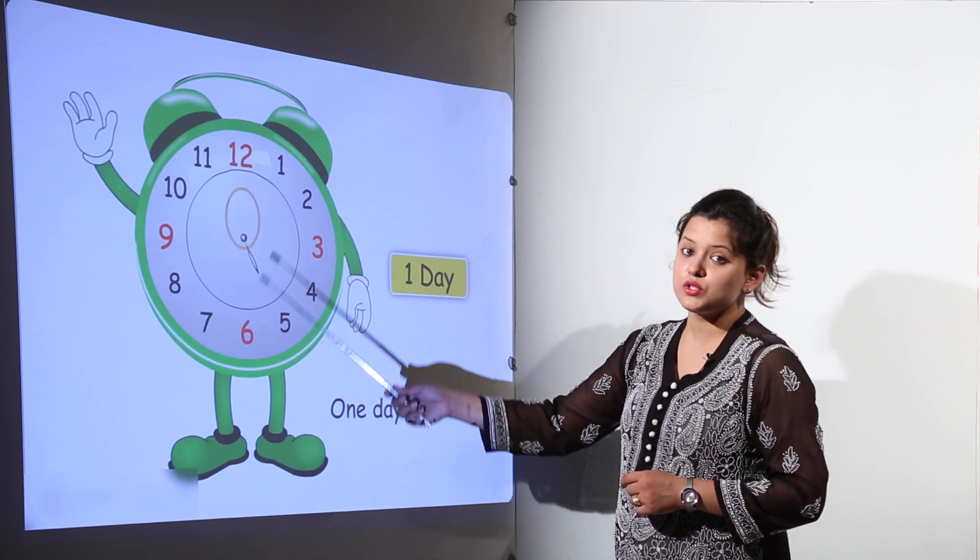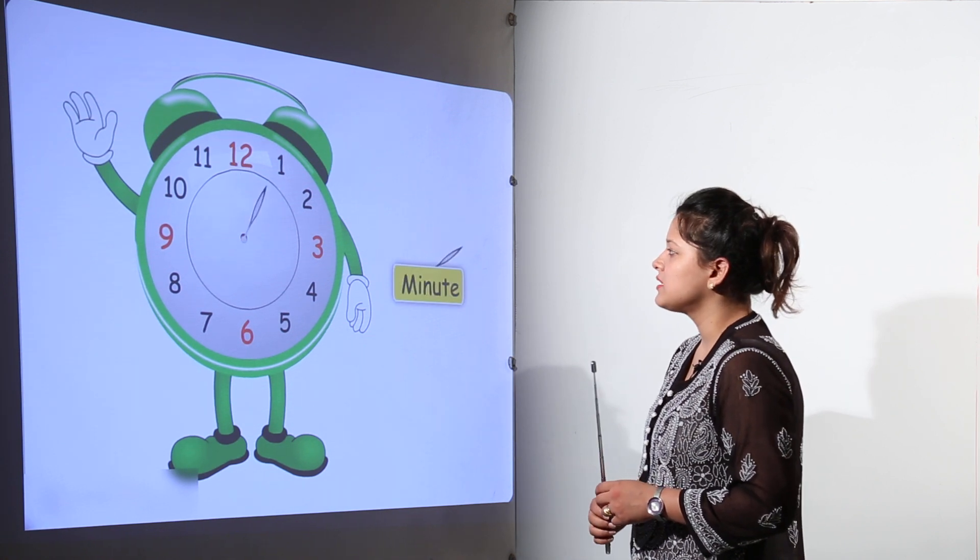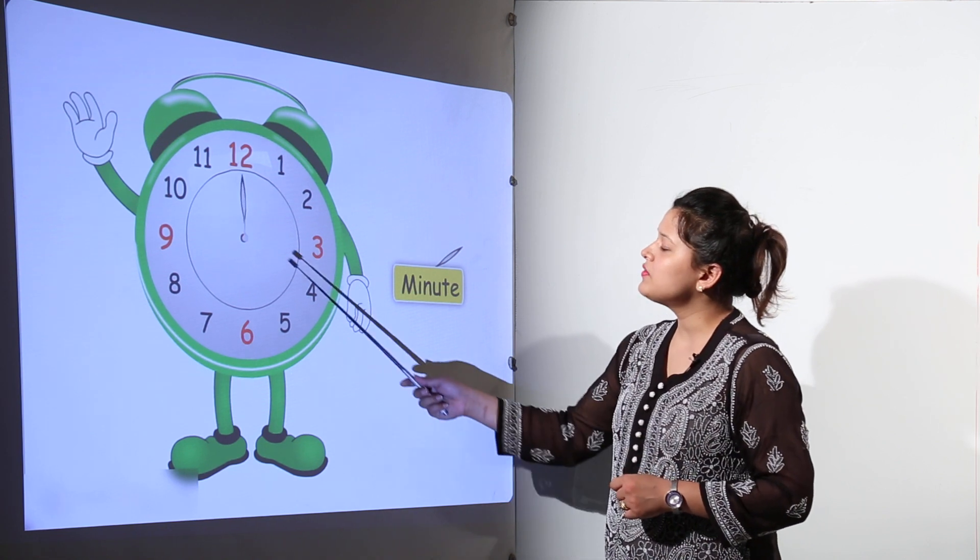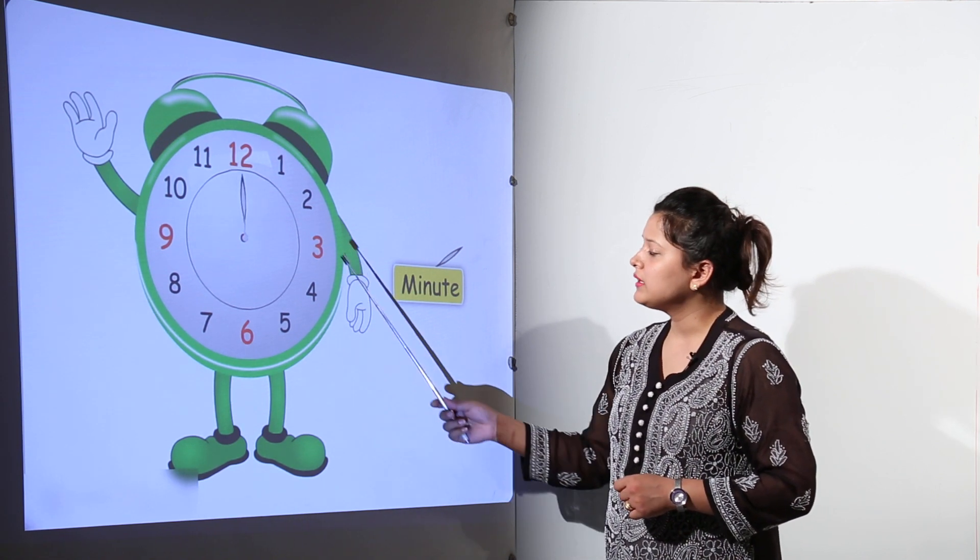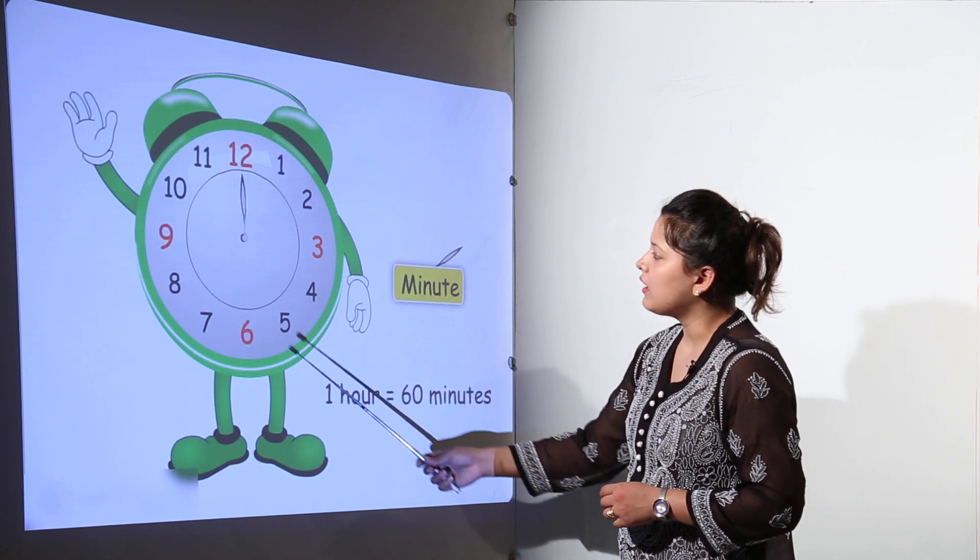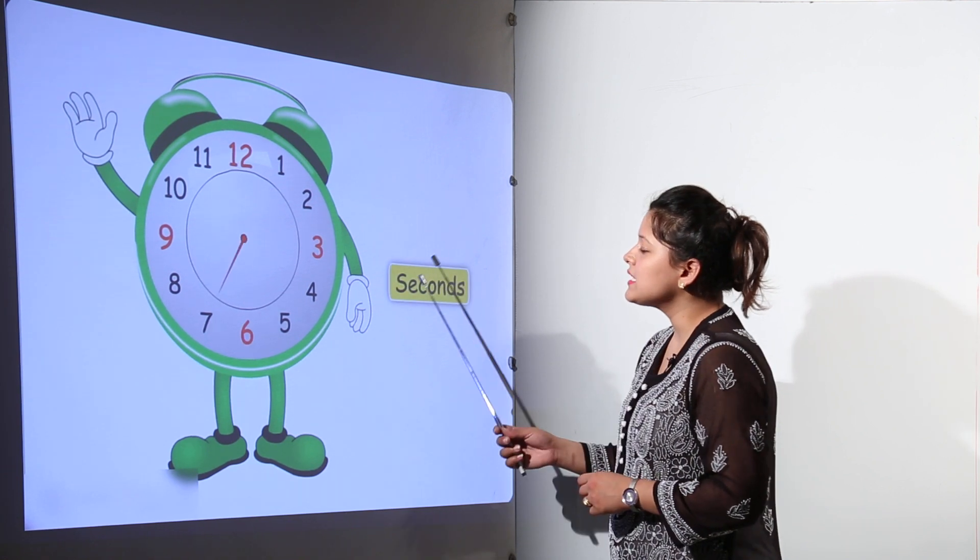If in total it takes a complete turn, its two turns would make the complete one day or we call it 24 hours. The minute hand moves in one minute. That means if it takes one complete round, that would be making one complete hour and one complete hour has 60 minutes.